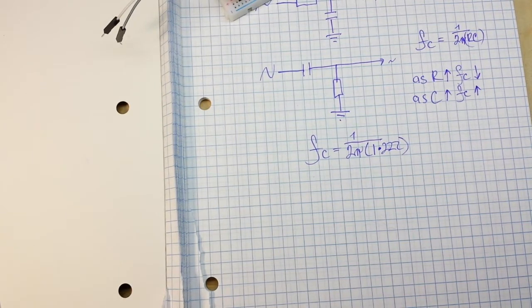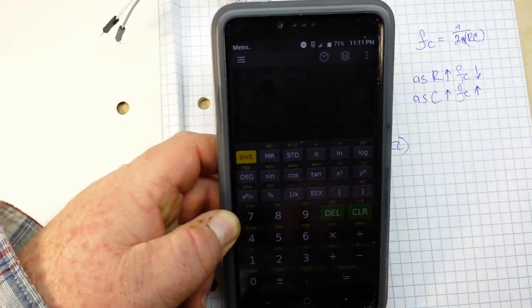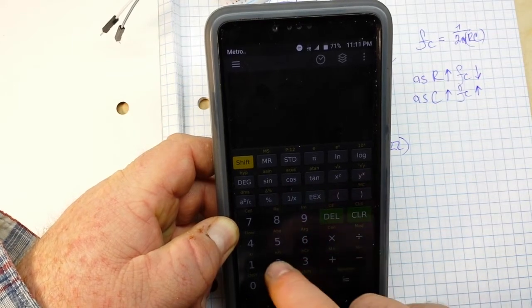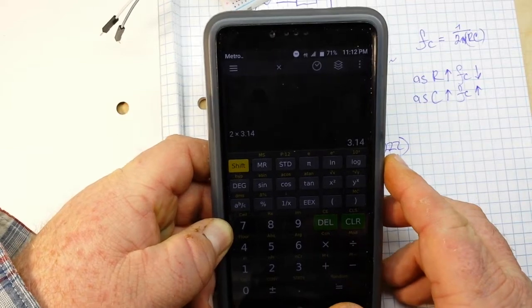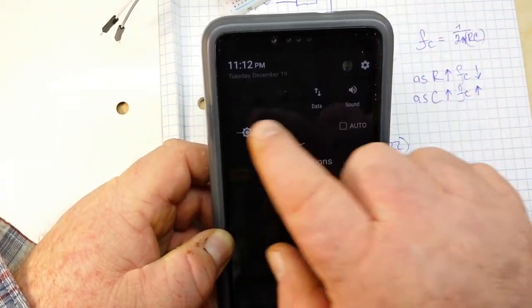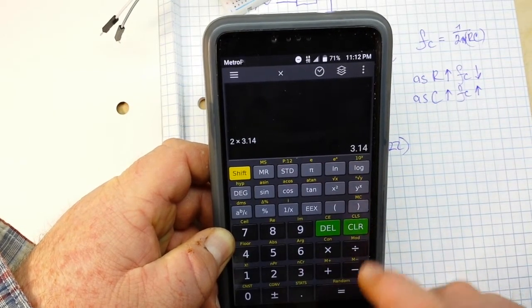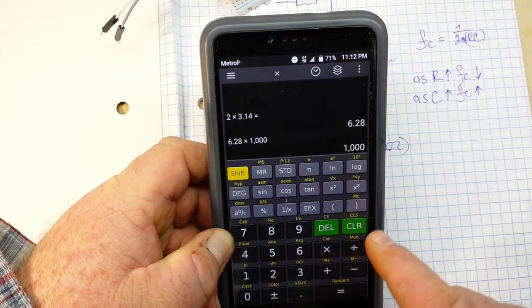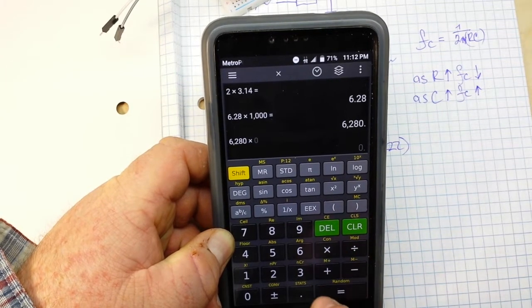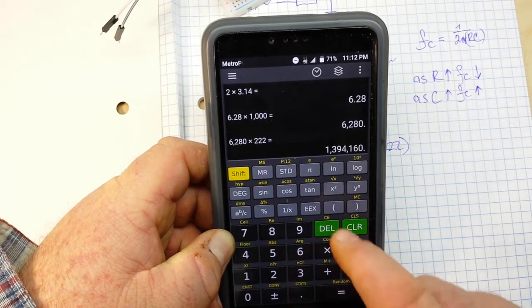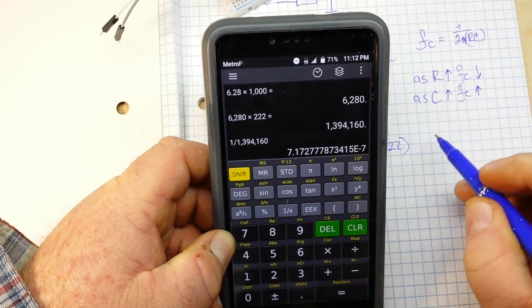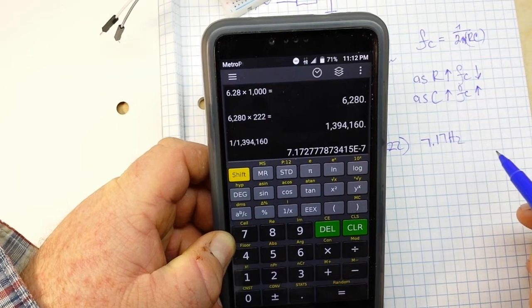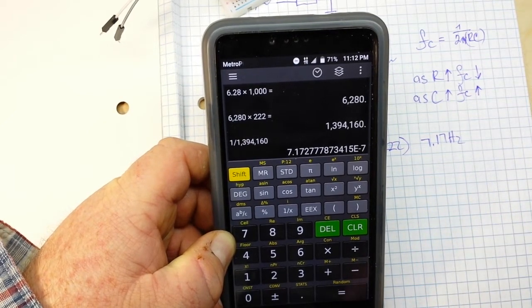So let's bring in a calculator and see if it works. 2 times 3.14 equals 6.28 times 1,000 times 2.222 and the reciprocal. And we get 7.17. Figure out the math, it's going to be somewhere around 700 hertz or so.